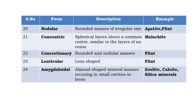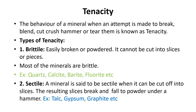Concentric form exists as spherical layers about a common center, similar to the shape of an onion — example is malachite. Concretionary form exists as rounded, nodular masses — example is flint. Lenticular form is lens-shaped — flint exists in both lenticular and concretionary form. Amygdaloidal form exists as almond-shaped masses occurring in small cavities in lava — examples are zeolite, calcite, and other silica minerals.